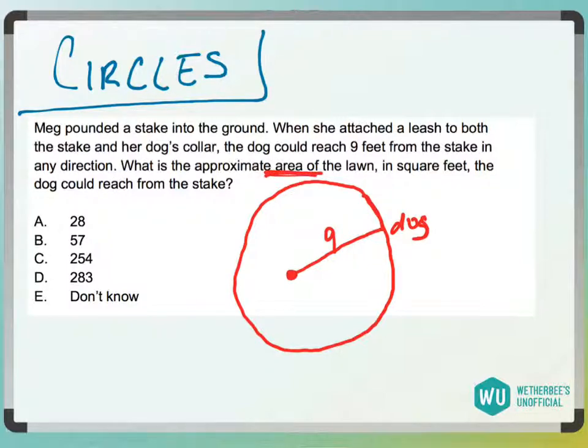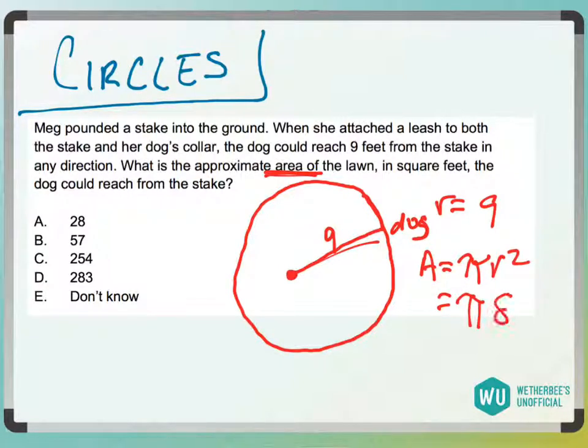So we want to know area, and this is a circle with a radius of nine. Area of a circle is pi r squared, which is going to be pi times 81. Nine squared.